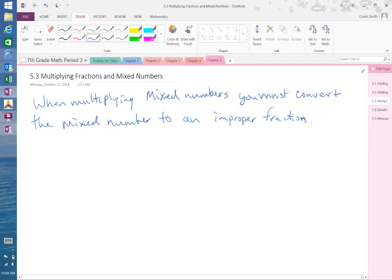Okay, for example, 4 and 1 eighth times 2 over 11. Before we can do this problem, we have to change the 4 and 1 eighth to an improper fraction.